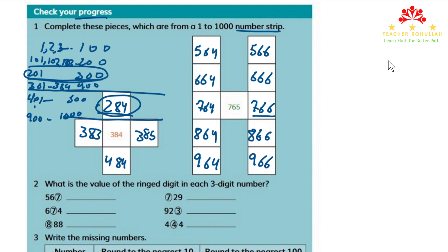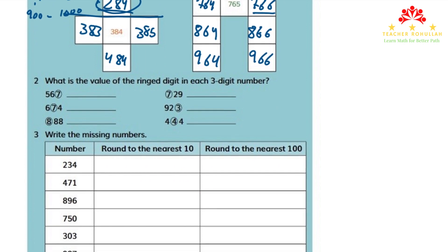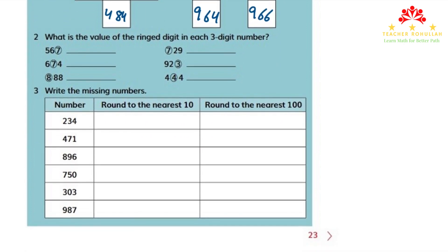So with this we are done with the first question and we now move to the second question. This question says: what is the value of the ringed digit in each three-digit number? The value we can choose according to the place value.